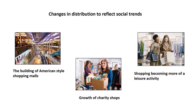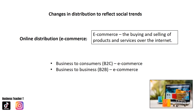There have been changes in distribution to reflect social trends. The way goods and services are sold is subject to change, and businesses need to be aware of this. Examples include the building of American-style shopping malls in the UK, the growth of charity shops, and shopping becoming more of a leisure activity. The most important new trend is the development of online distribution, also called e-commerce, which is the buying and selling of products and services over the internet.